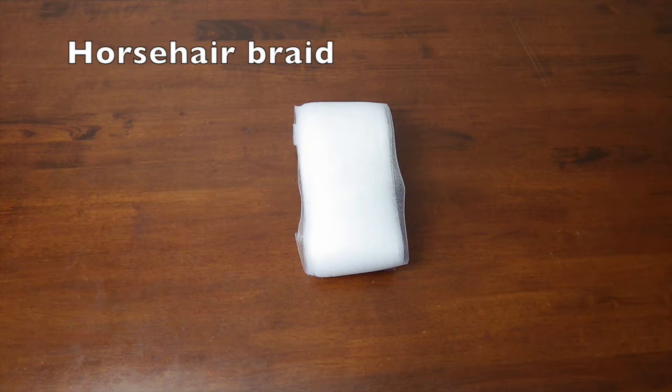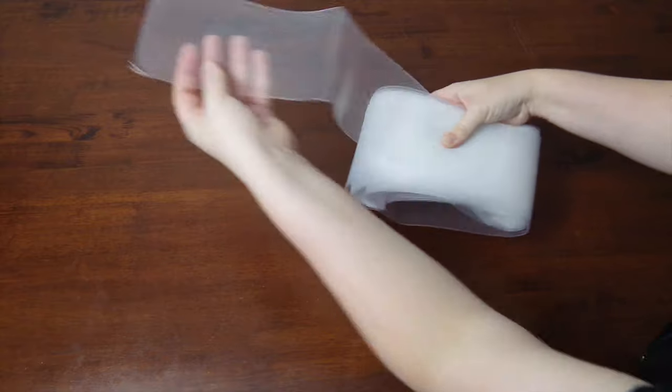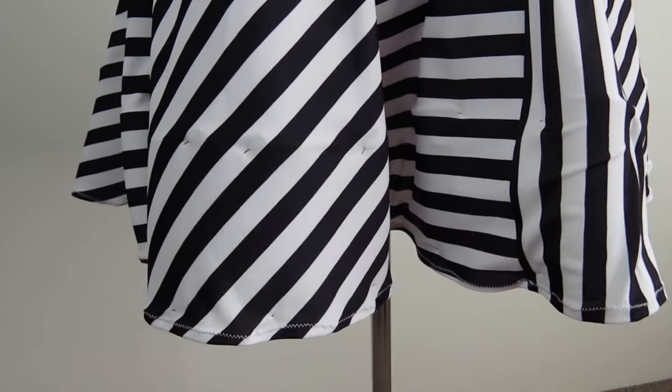Next up is horsehair braid. It comes in various widths, and is often used in the hems of skirts to give it a wave effect. Here is an example of horsehair braid, quickly pinned into a circle skirt.